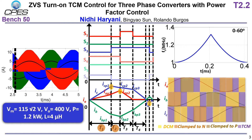The challenge is how do we achieve TCM in three-phase voltages, which are different for different phases at the same time. When we zoom in to the sector 1 switching waveform, we can see that we have to do a combination of discontinuous conduction mode plus triangular conduction mode plus clamping the third phase. Since phase A voltage is a minimum in sector 1, phase A is in DCM, phase C is in TCM, and phase B, which has the maximum average current, is clamped.